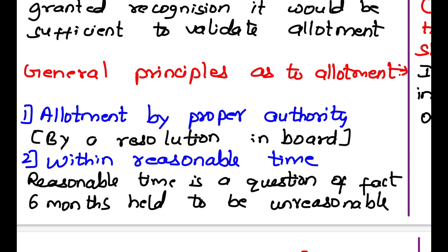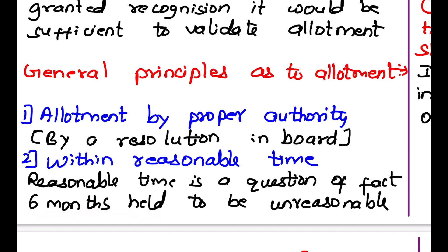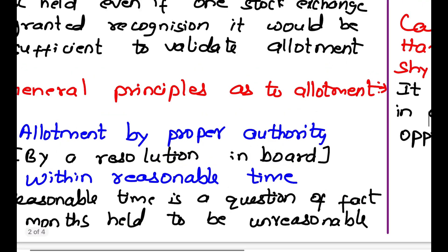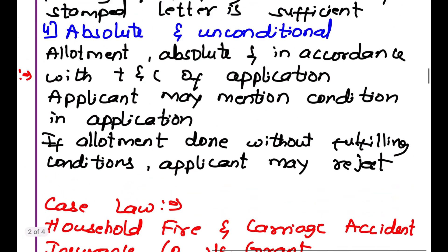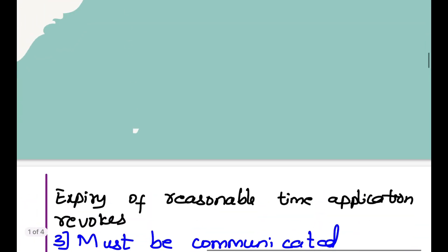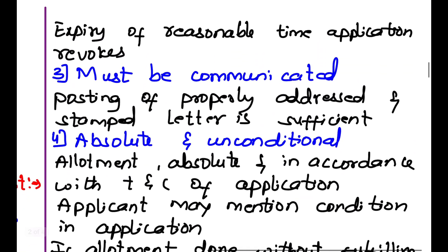The next principle is allotment within a reasonable time. The allotment of shares should be done within a reasonable time. If a person has applied to buy shares, then his application should be accepted within a reasonable time. Six months was held to be unreasonable, and reasonable time is always a question of fact.